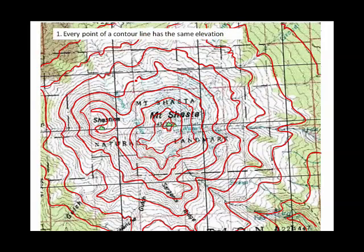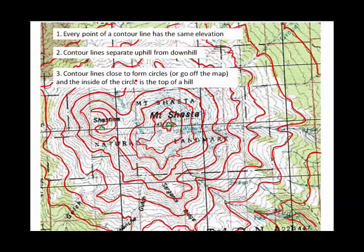Every point of a contour line has the same elevation. Contour lines separate uphill from downhill, and they always close to form circles — always, if you had a big enough map. This contour line over here on the right runs off the map, but if you had a bigger map, it would form a big circle. And the inside of the circle is always the higher elevation.